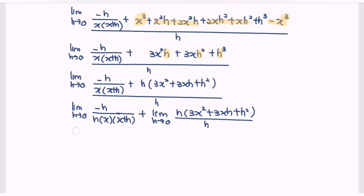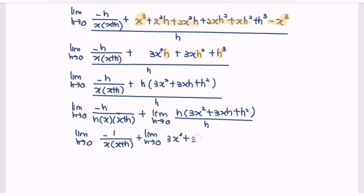Rewrite after cancelling h: limit as h approaches zero of negative 1 over x(x plus h), plus limit as h approaches zero of 3x squared plus 3xh plus h squared. Now substitute h equals zero. As a conclusion, f prime of x is equal to negative 1 over x squared plus 3x squared.